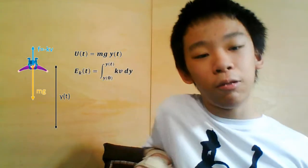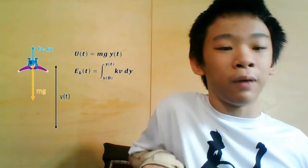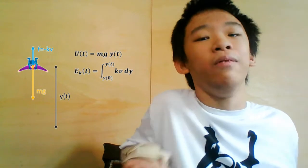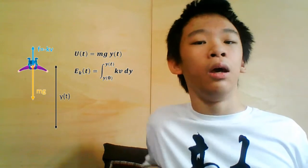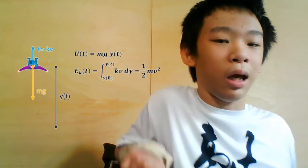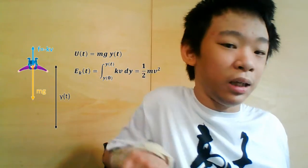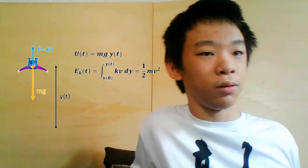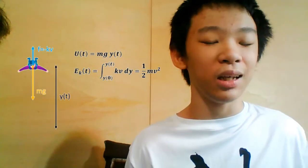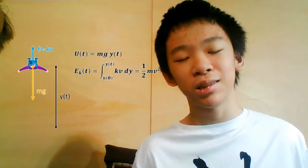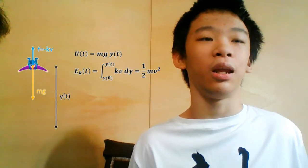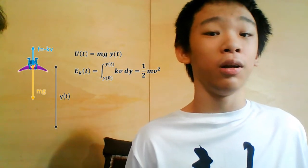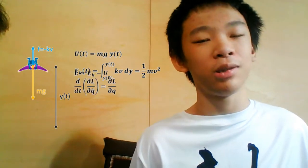The work done by friction Wf equals the integral of f dy equals the integral of kV dy, which equals the change in kinetic energy, Ek(t) minus Ek(0). Since the skydiver starts from rest, the initial kinetic energy is 0. Using the Euler-Lagrange equation,